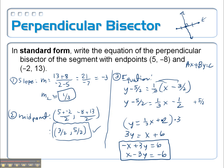And it only takes a second to check — remember the only point we get to check is the midpoint, 3 halves comma 5 halves. So I'll let those of you at home go ahead and check that. Bye for now.